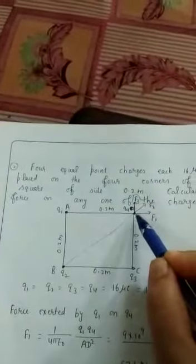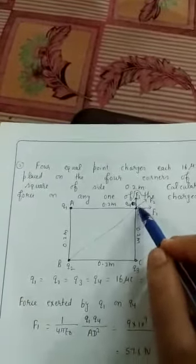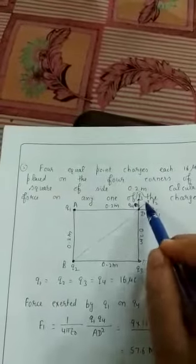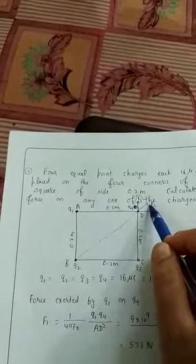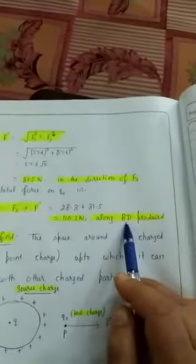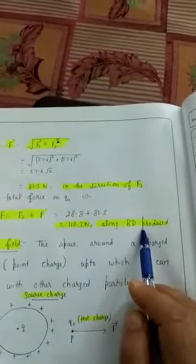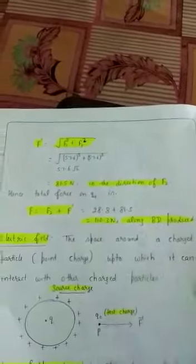We have the resultant force. The direction of F' which is the resultant of F1 and F3, is along F2. The resultant of F' and F2, that is the total force. The direction of this total resultant force is along BD produced. This force is experienced by charge q4.